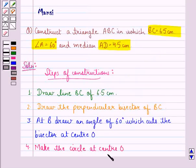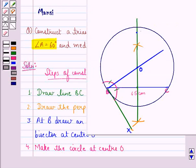Step 4 is, make the circle at center O. So like this we make the circle at center O.